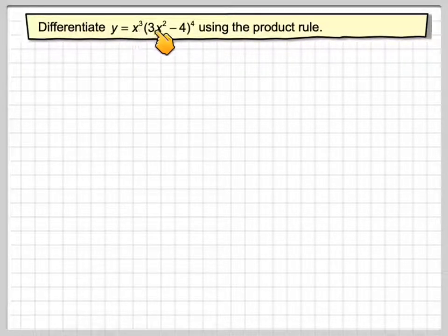Differentiate y equals x cubed times 3x squared minus 4 to the power of 4 using the product rule.